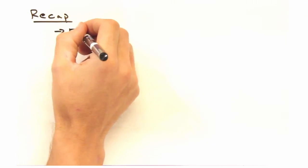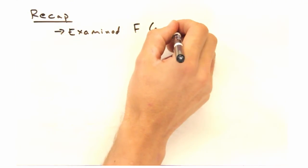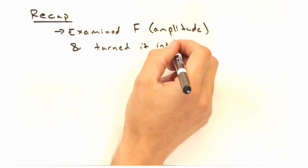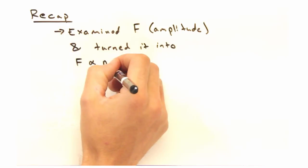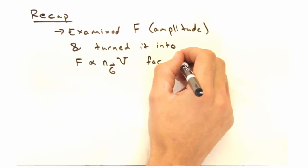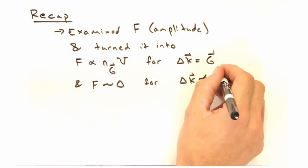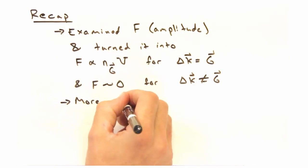So today, we examined the diffraction equation in detail, and made some assumptions which allowed us to simplify the amplitude of the diffracted wave to something a little more manageable. In the end, we found that constructive interference only occurs when delta K equals a G vector of the sample crystal.